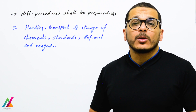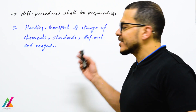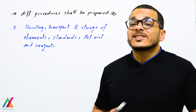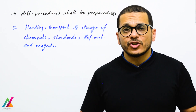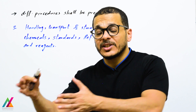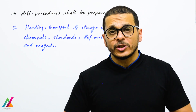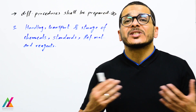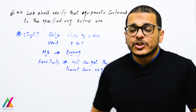A third procedure shall cover handling, transport, and storage of chemicals, reagents, standards, and reference materials — since in the 2017 edition these are all considered equipment. Prepare an SOP for each instrument, a general maintenance procedure (preventive and emergency) as applicable to your lab, and a procedure for handling, transport, and storage of chemicals, reagents, reference materials, and standards. These will vary from lab to lab based on your specific rules.